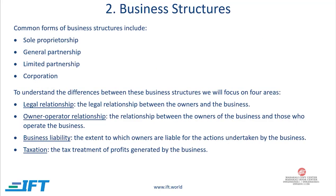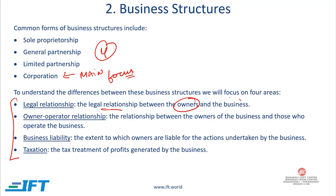Let's get started with the business structures. We're going to look at four different types, but our main focus will be on corporations. We'll look at how the legal relationship between the owner of the company is with the company itself. For example, the sole proprietorship — the owner and the business are the same. There is no legal difference between them, and therefore there is no owner-operator separation either.